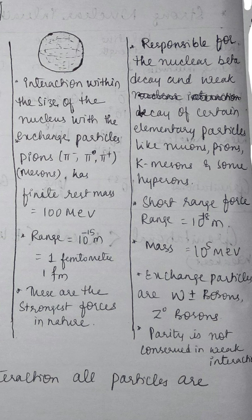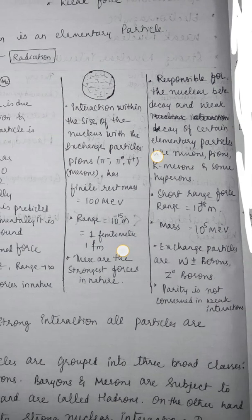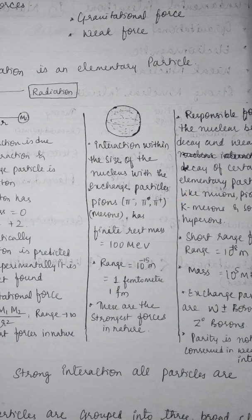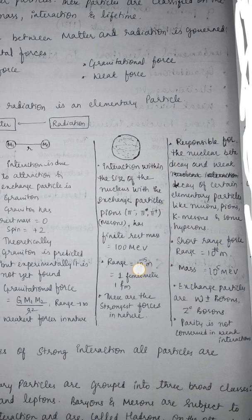This is all about the fundamental forces that act in nature. On the basis of these fundamental forces, particles can be classified — whether through strong nuclear interaction or weak nuclear interaction — into baryons, mesons, and leptons. We will classify these elementary particles in the next video. Thank you.